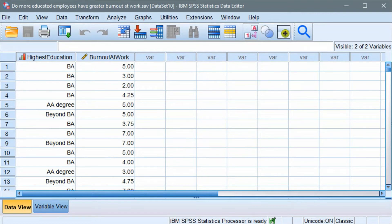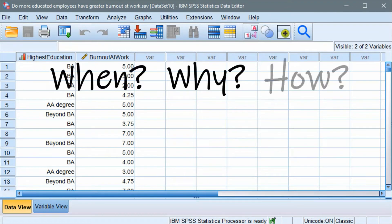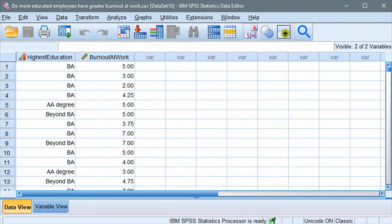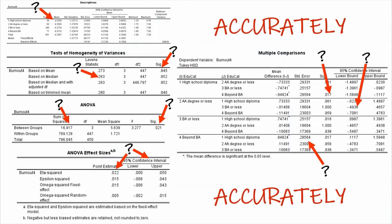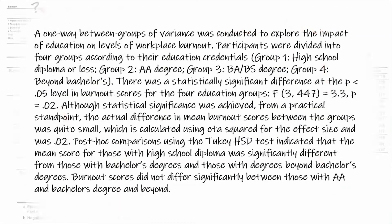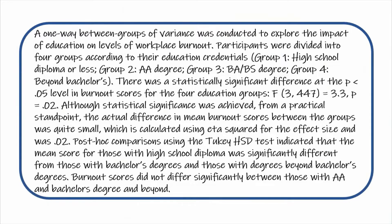Hi. In this video, you'll first learn when, why, and how to run one-way ANOVA using SPSS. Second, you'll learn to focus on what it is exactly that you need to interpret, rather than wasting your time on trying to interpret all the numbers that really do not add any value to your presentation. Third, you'll learn how to interpret the output accurately. And finally, you'll learn to narrate and present the results in your paper both coherently and concisely so that your audience, teachers, or classmates don't fall asleep during your presentation. Now let's get right to it.